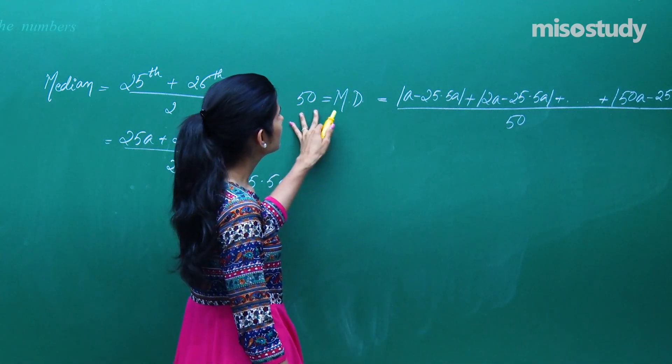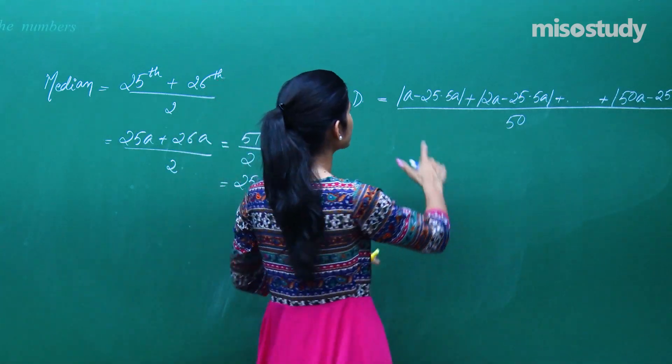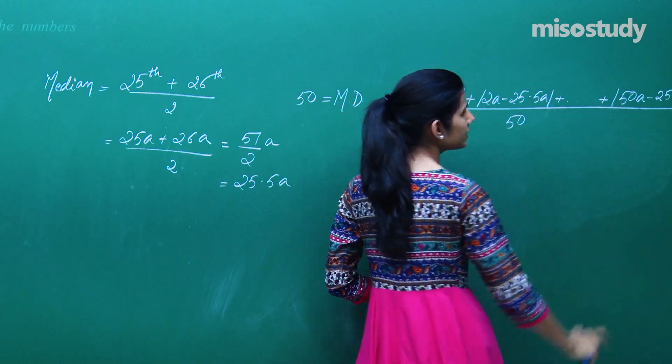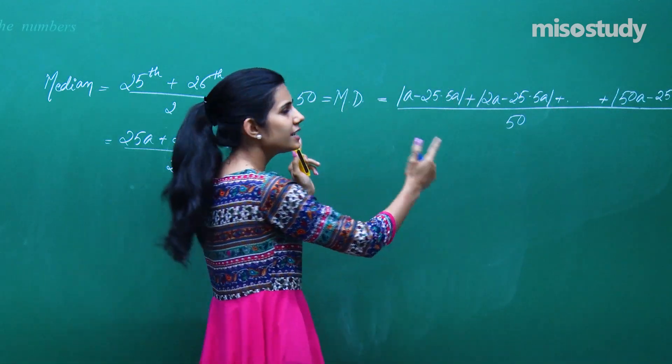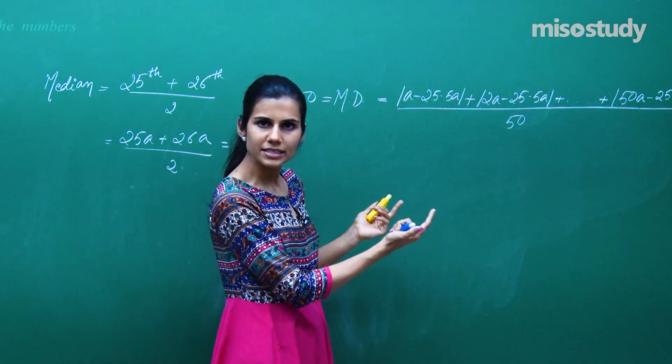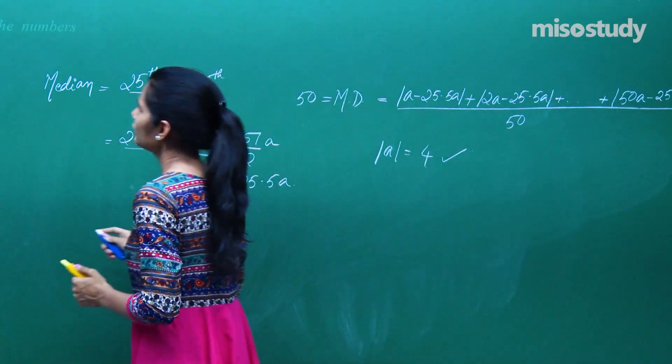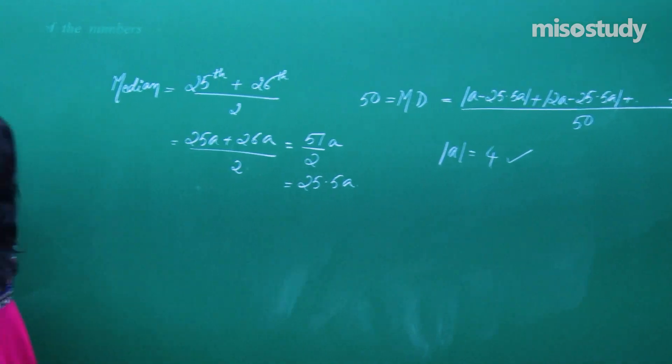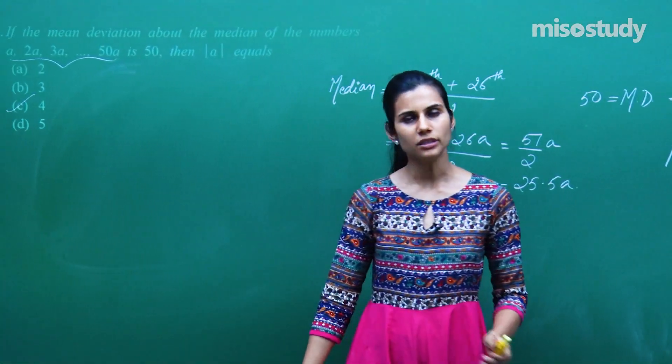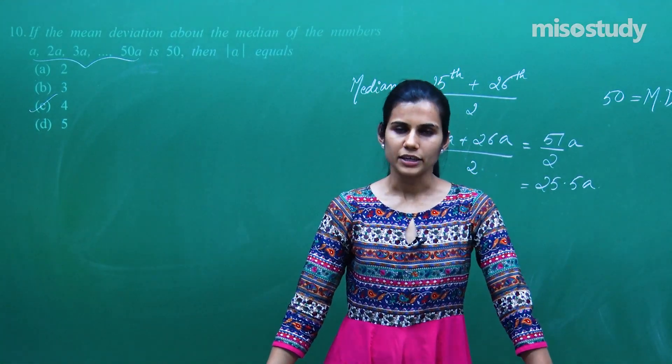That means what happens? Ab jab mein isko resolve karungi aap clearly dekh sakte hai har jagah se mod A mod A mod A bahar nikalega. So eventually sirf ek hi unknown rahega mod A jiske terms mein aapke paas equation banegi and you will get mod A equal to 4. So therefore the value of your mod A is equal to 4 and that completes the discussion over the questions. Revise them nicely. Thank you.